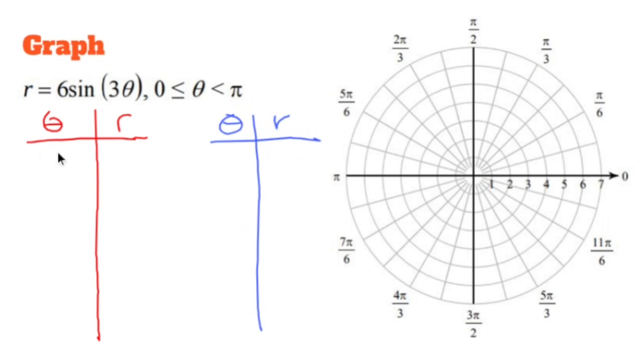All right. So I'm going to plug in 0, pi over 12, pi over 6, pi over 4, pi over 3, 5 pi over 12, and pi over 2.